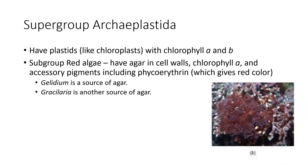The Archaeplastids are named for the plastids — colored organelles present in cells. Pigments are usually stored in there, or food that has a pigment stored in a plastid. Chloroplast is the best-known example of a plastid. Archaeplastids usually have both chlorophyll A and B; some will only have chlorophyll A and then some accessory pigments. The subgroup red algae are called that because they are red algae. Gelidium is one source for agar, and Gracilaria is another — agar is of course what we use to solidify media in the lab.